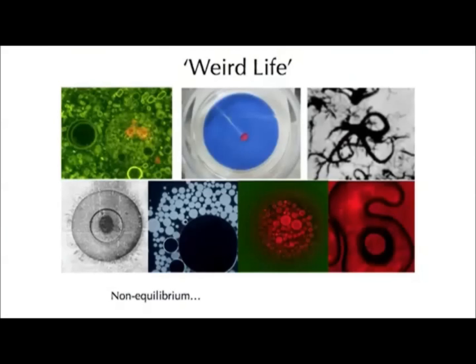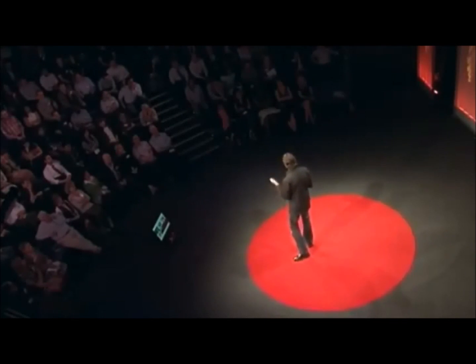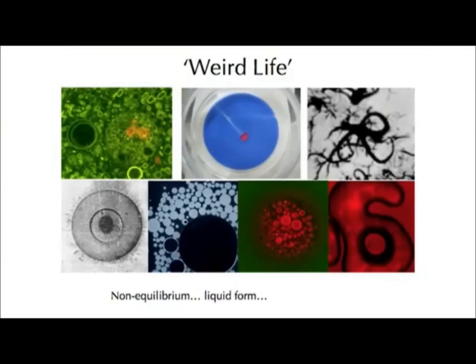They came up with three very general criteria. First, the system has to be in non-equilibrium — that means the system cannot be dead. Basically, you have an input of energy into the system that life can use and exploit to maintain itself. This is similar to having the sun shining on the Earth, driving photosynthesis and driving the ecosystem — without the sun there would likely be no life on this planet.